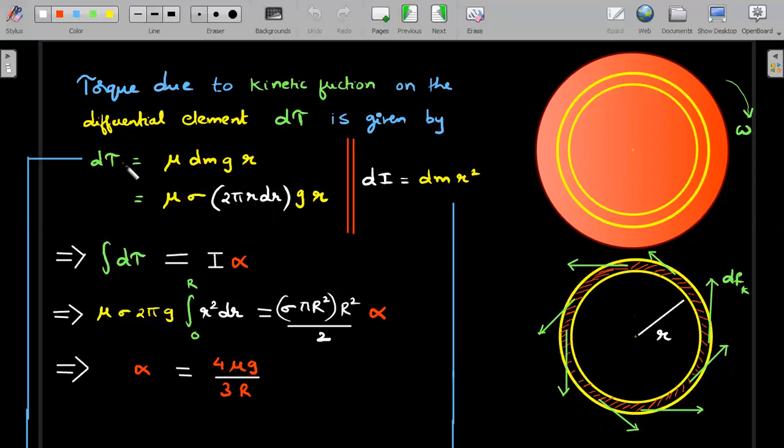If we write integration of all d tau equals I alpha and formulate this solution, you get alpha for the disk which is 4μg/3R. But if I actually write d tau equals dI into alpha and do the manipulation with these two—remember this is integral form and this is differential form—if I forcibly write d tau equals dI into alpha from the top things and divide these two, you could clearly see I'll not get the same alpha as I got from the integration, which tells us that one of these two expressions is definitely wrong.